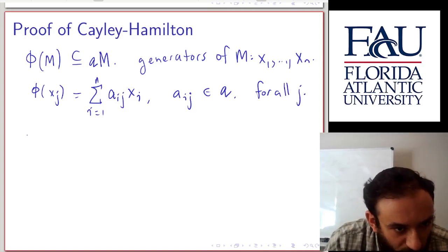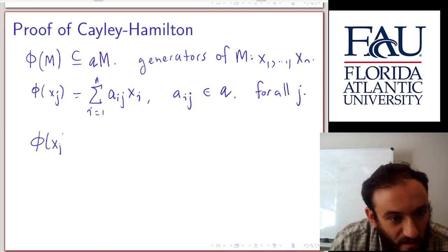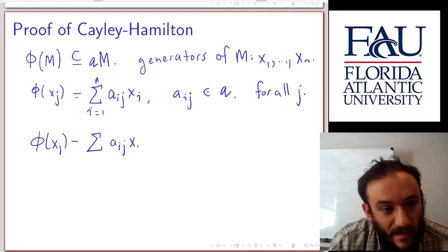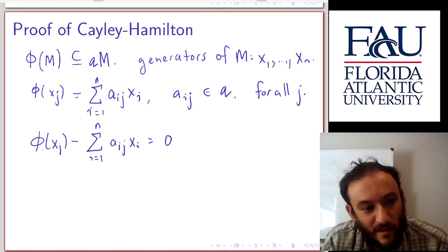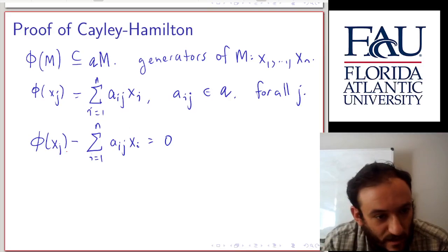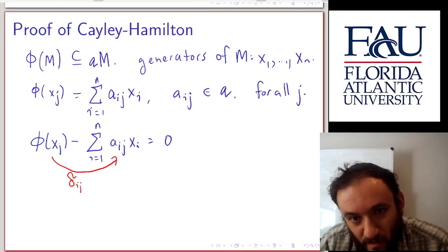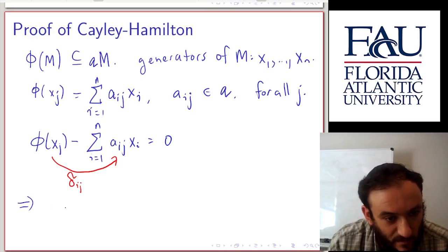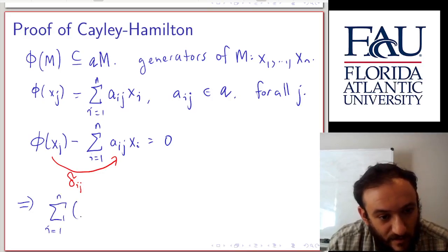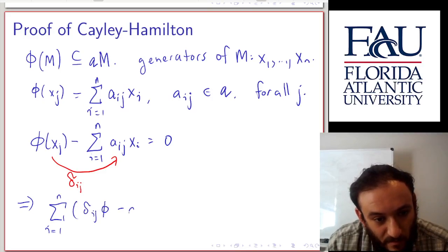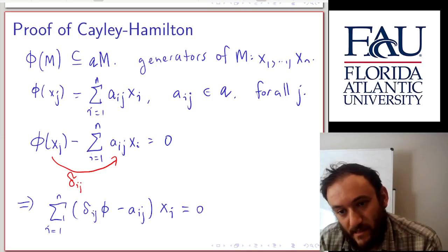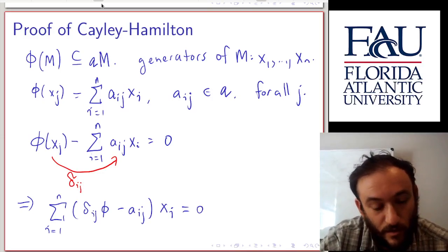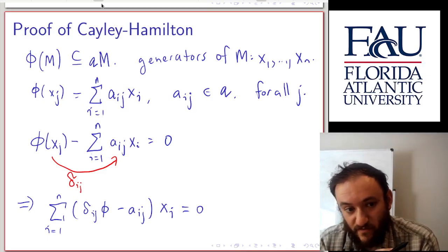Putting all of this on one side of an equation: phi(x_j) minus the sum a_{ij}·x_i = 0, for i from 1 to n. We can rewrite this using the Kronecker delta — which is zero except when i equals j — to get: sum for i from 1 to n of (delta_{ij}·phi - a_{ij})·x_i = 0. We now recognize this as essentially a matrix equation, where the row of the matrix is given by delta_{ij}·phi - a_{ij}, and the vector being multiplied is all the x_i's.